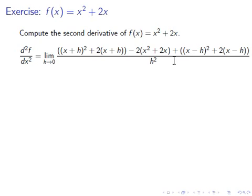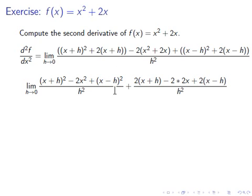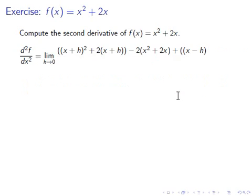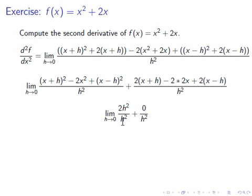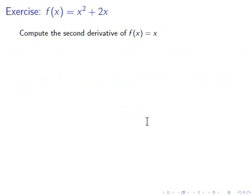We expand (x+h)² and (x-h)² and combine them with the 2x² term. This part of the formula becomes 2, as it did in the example. And 2(x+h) minus 2 times 2x plus 2(x-h) gives 2x minus 4x plus 2x equals 0, and 2h minus 2h equals 0 as well. So we again get 2h² over h² plus 0 over h², giving the limit of 2 as h approaches 0. The second derivative of x² plus 2x is 2. Thank you for listening.